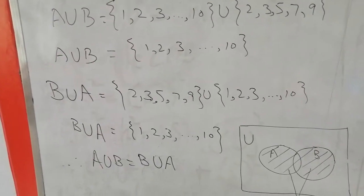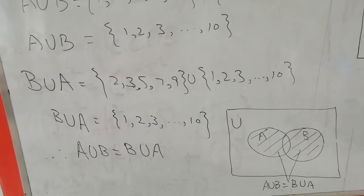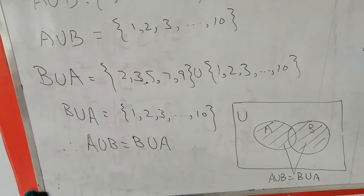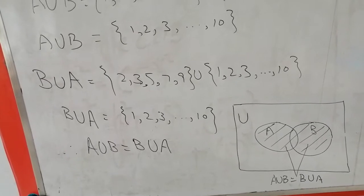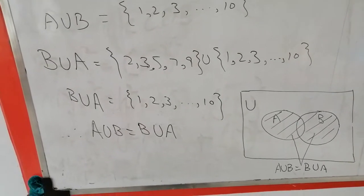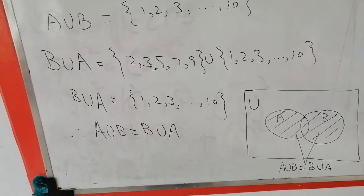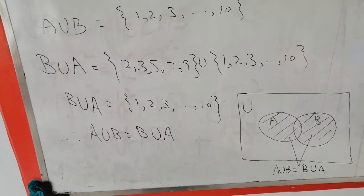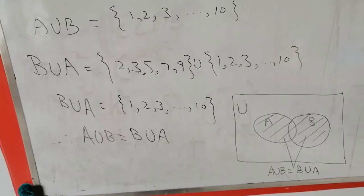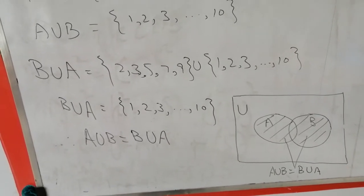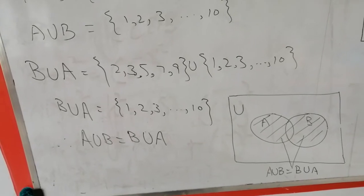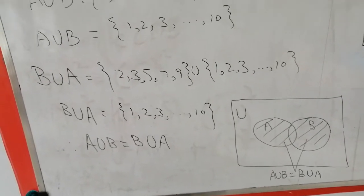Now we represent this using a Venn diagram. Since these are overlapping sets, we draw a rectangle for the universal set U and two closed figures for A and B. For A union B, we highlight all elements of both sets. Similarly, for B union A, we also highlight all elements. So A union B equals B union A.